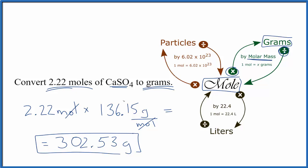To recap, we took our moles, we multiplied by the molar mass, moles canceled out, so we know we have the correct answer, 302.53 grams. This is Dr. B converting from moles of calcium sulfate CaSO4 to grams. Thanks for watching.